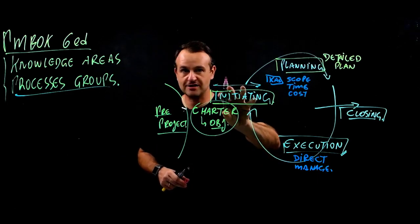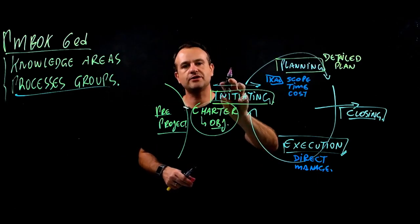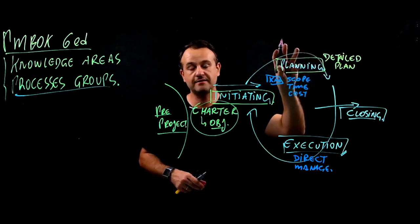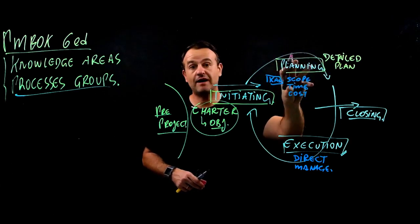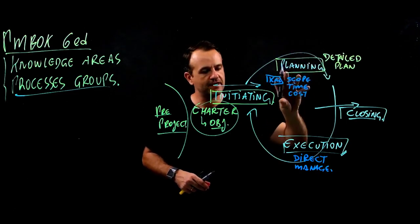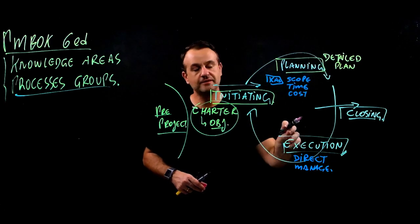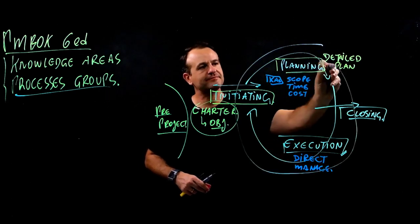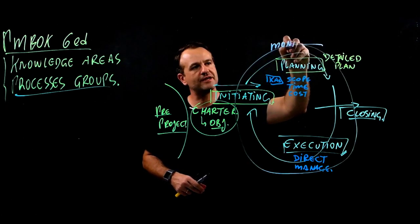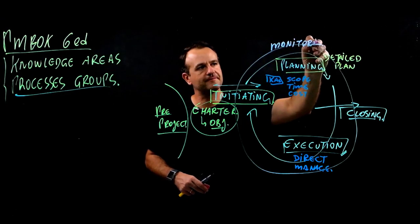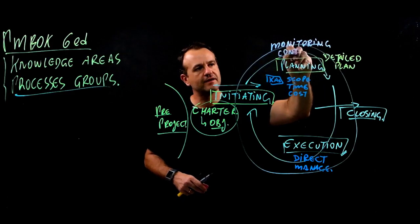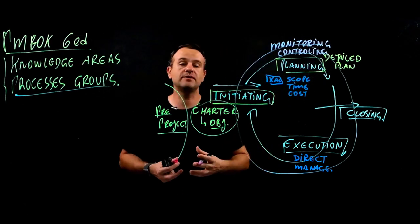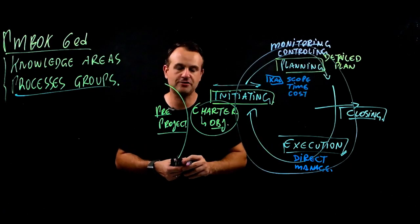So to summarize: the first process group is Initiating — authorization and approval. The second process group is Planning — we create a detailed plan and define how we are going to execute the project. The third process group, Executing, is where we do the work and get the job done. We also have a fourth process group, Monitoring and Controlling, which monitors not only the execution but also the planning, initiation, and closing, so that we have configuration management, for example.